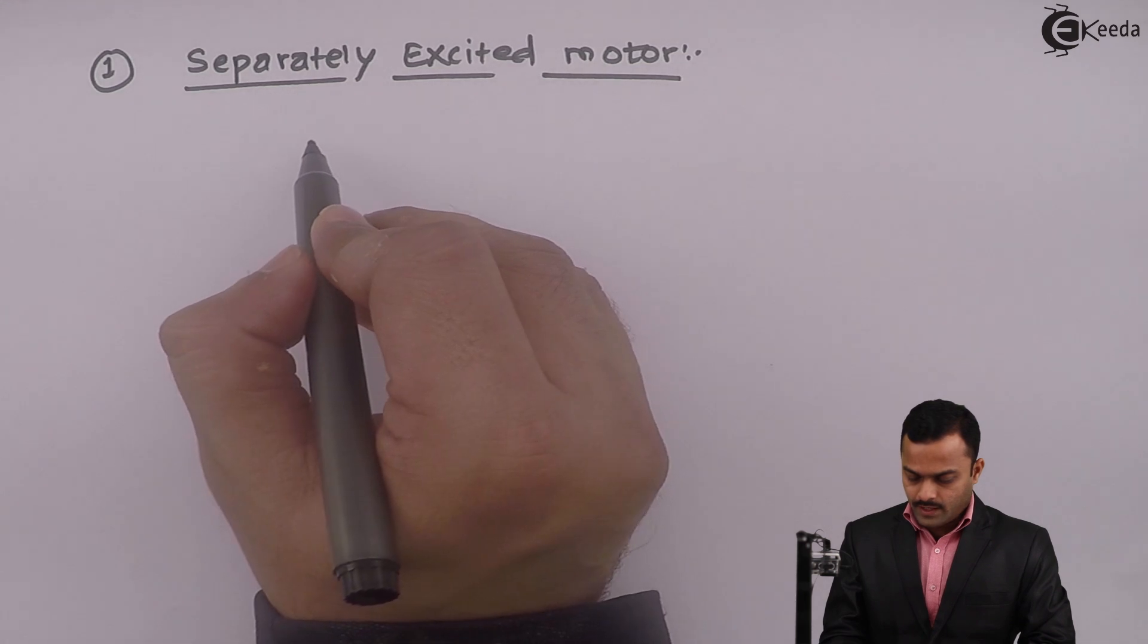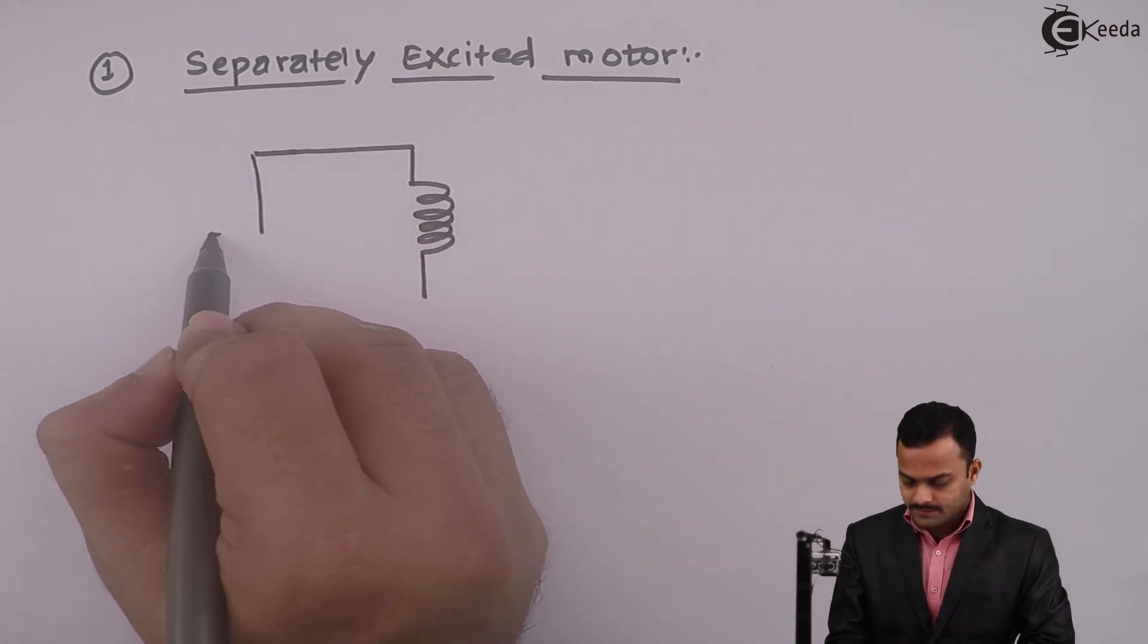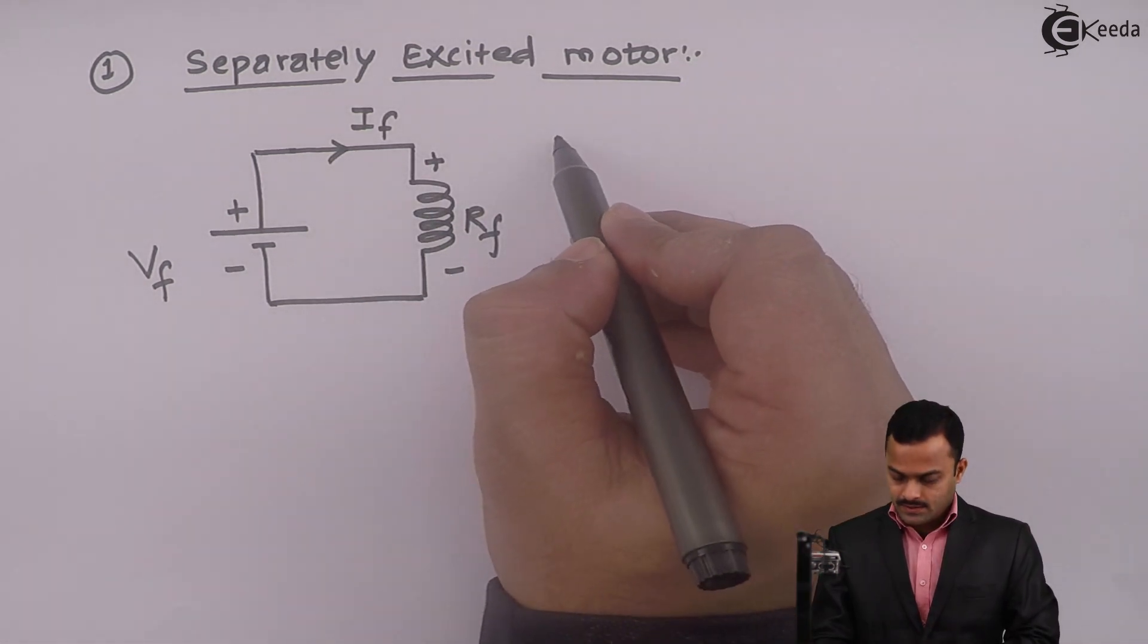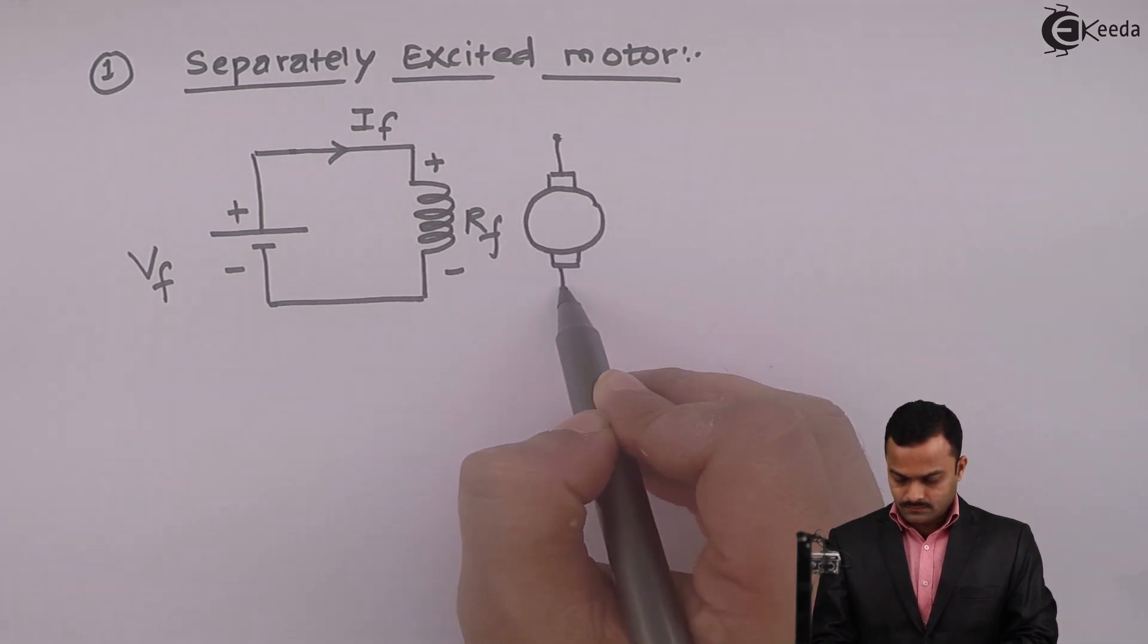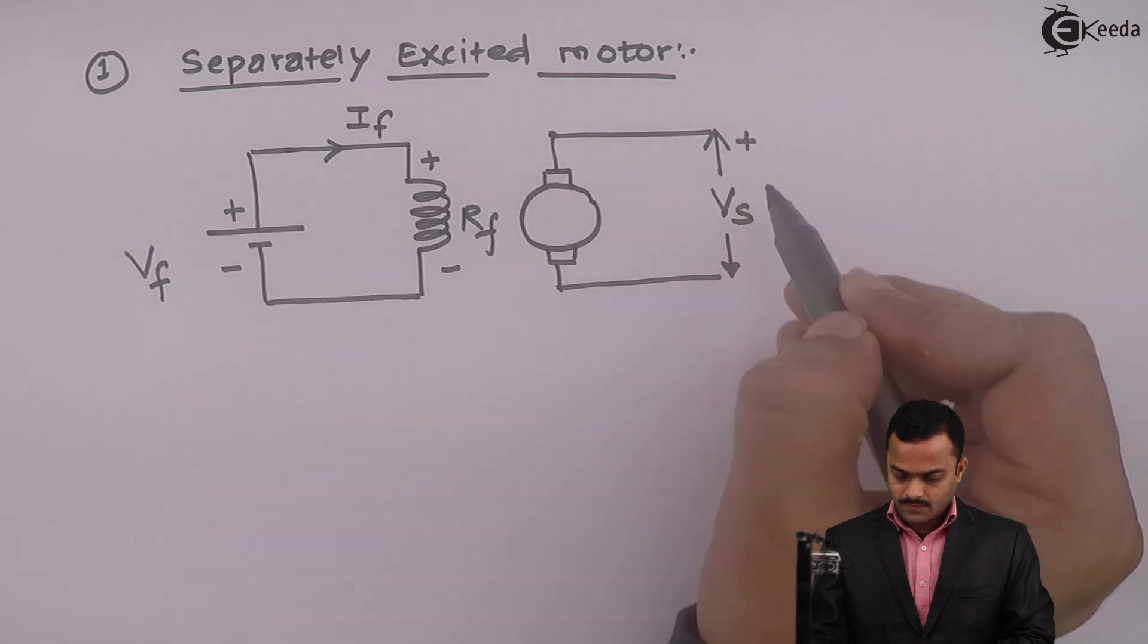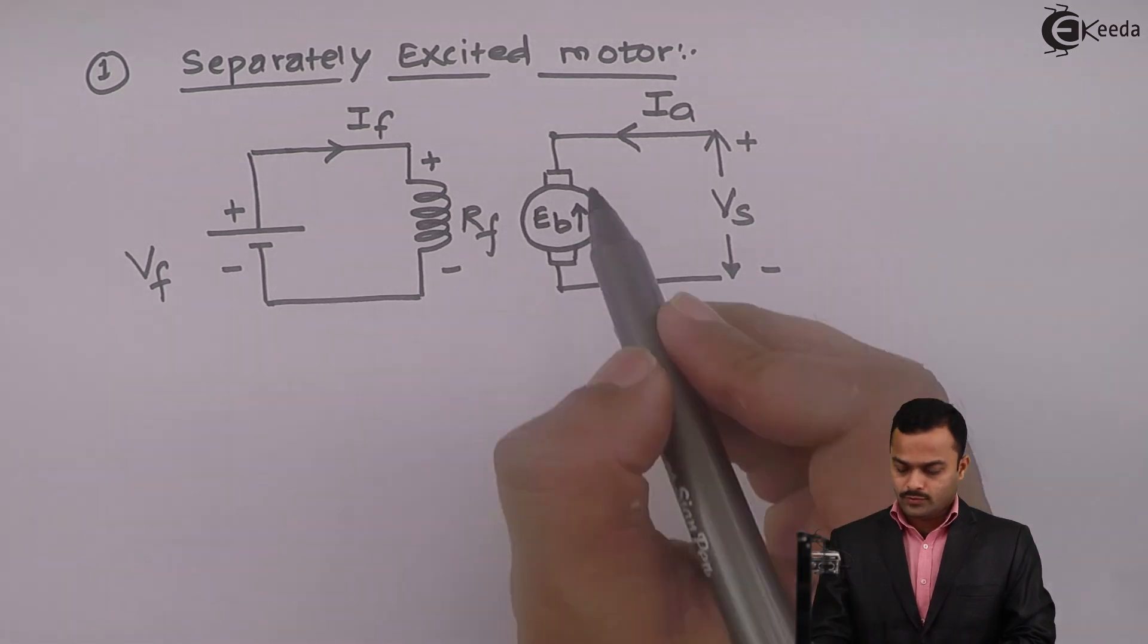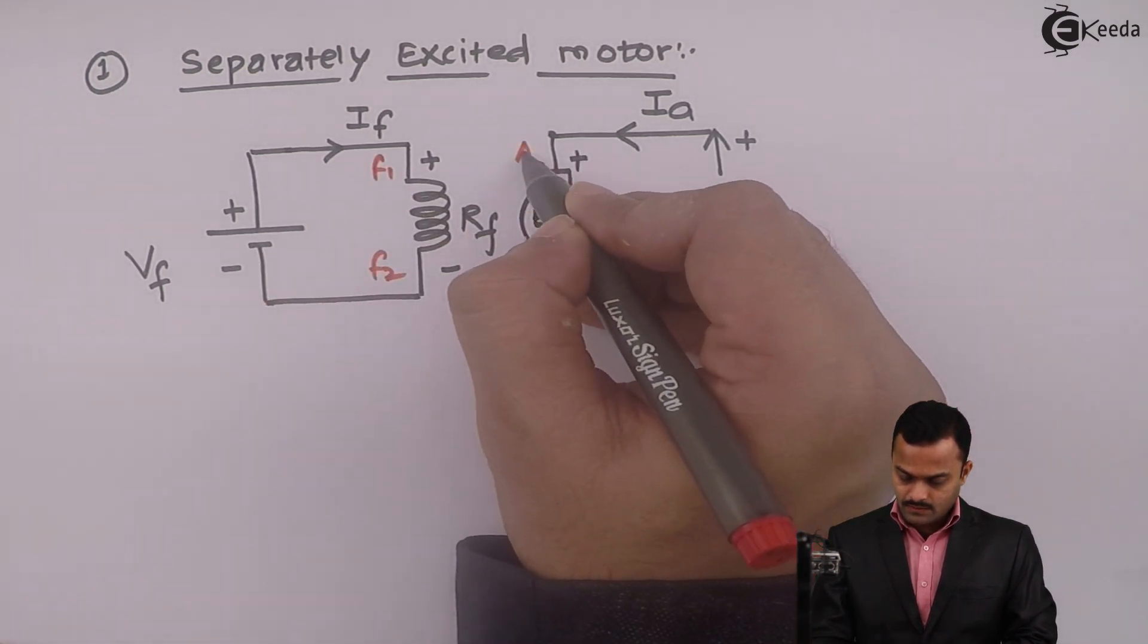Here field winding is excited through separate supply to produce a flux which is responsible for motoring action. This is the armature excited by armature voltage or supply voltage Vs. It will pass armature current which will generate a back EMF because of generating action of a motor. So these are the terminals F1 F2 of field winding, for armature T1 and T2.